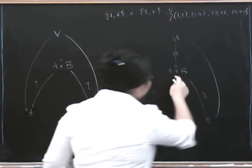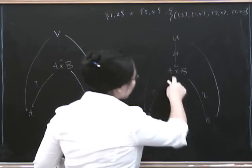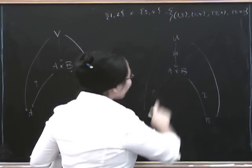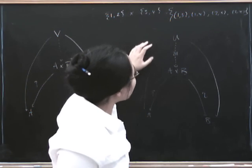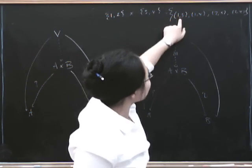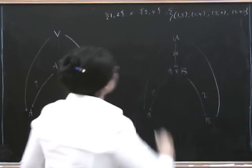Because to make it into a product, we have to decide what we're going to regard the projection maps as being. And when we've done that, essentially what we've done is we've decided which of our four elements is secretly going to be acting as these things.